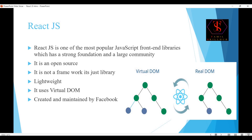ReactJS is famous nowadays, and a key reason is its use of a Virtual DOM. It checks what changes are made and compares them against the real DOM. The Virtual DOM works like a card — it holds one image and one website structure, and when you add a new element, it compares and updates only the changed part.